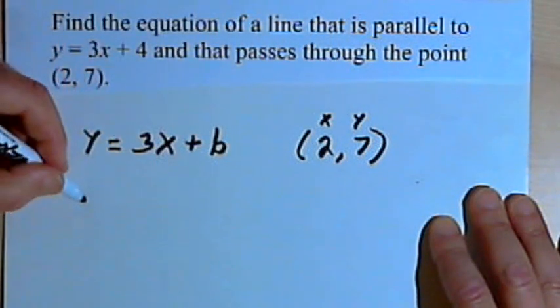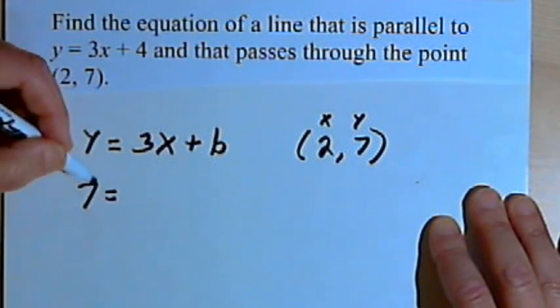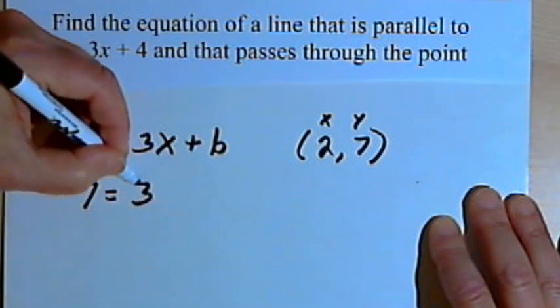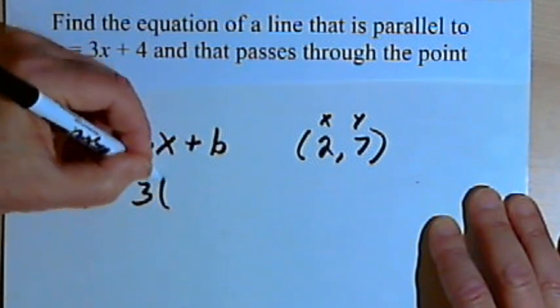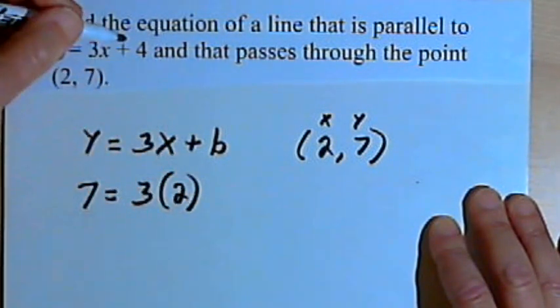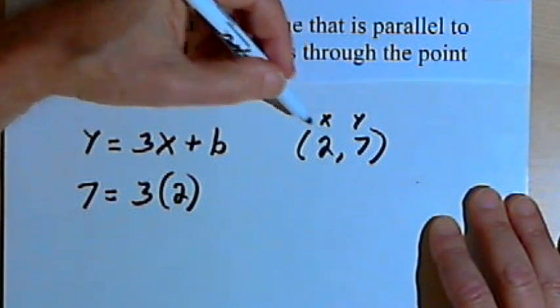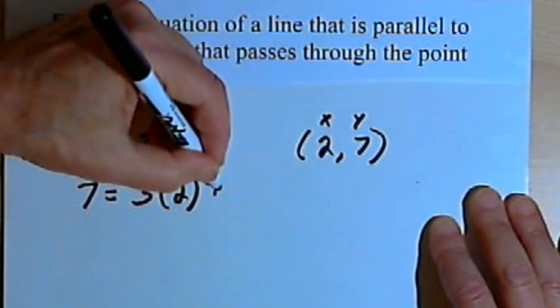So instead of y, I'll put in a 7, and that means 7 equals 3. And instead of x, it's going to be 3 times 2. That's the x I'm given, plus b.